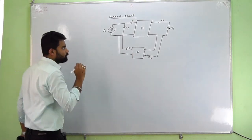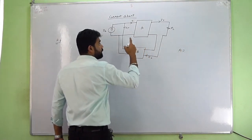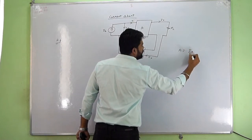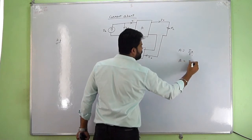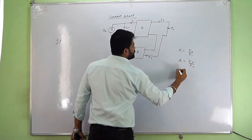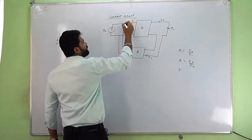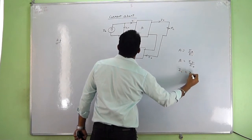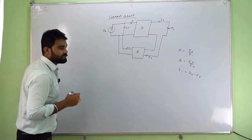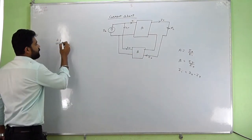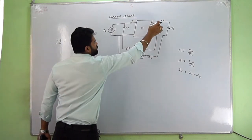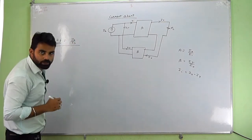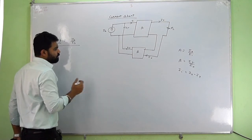First of all we have to calculate what is AF. According to this, A is equal to I-naught upon II, beta is equal to IF upon I-naught, and by KCL: II equals IS minus IF. We have to calculate AF, where AF stands for the complete feedback — that is, what is the ultimate output, I-naught, and what is the ultimate input, IS.